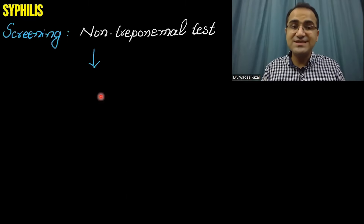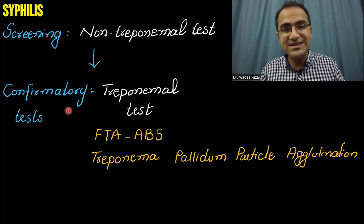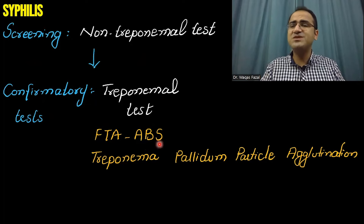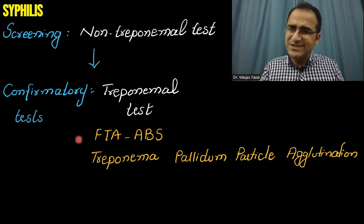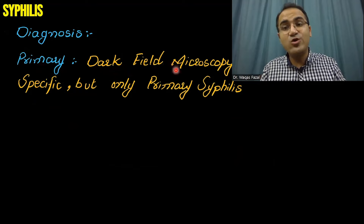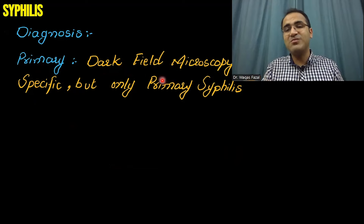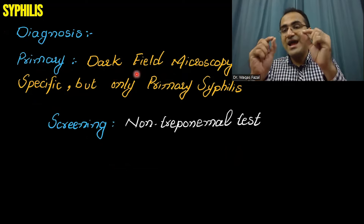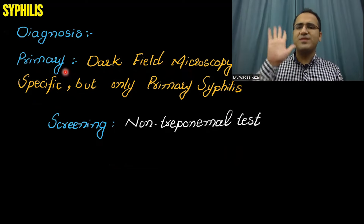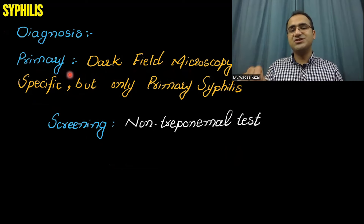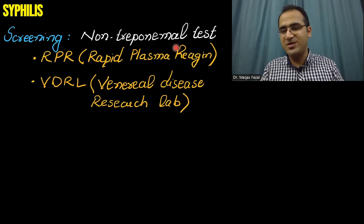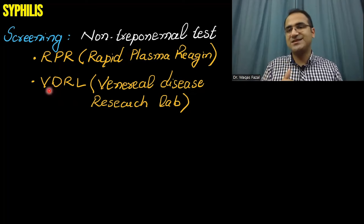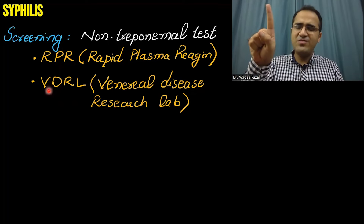Now coming to the diagnosis of syphilis. Syphilis is diagnosed with screening tests and then confirmatory tests. Screening tests are non-treponemal tests, and confirmatory tests are treponemal tests — FTA-ABS being the most important confirmatory test. In primary syphilis, dark field microscopy is the most important and most specific test; it can only be done in primary syphilis. Dark field microscopy is not used for secondary or tertiary syphilis.